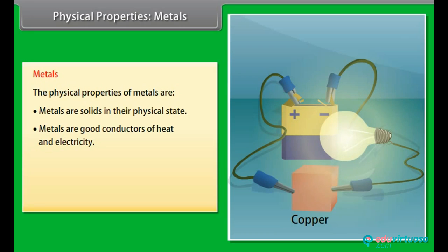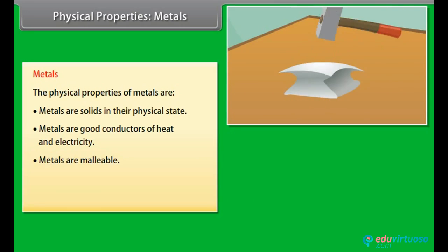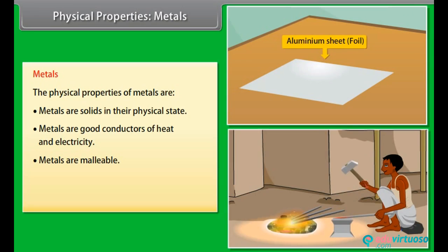Malleable. Metals can withstand hammering and be made into thin sheets known as foils. For example, iron is heated and then hammered into different forms, foils, shapes, etc.